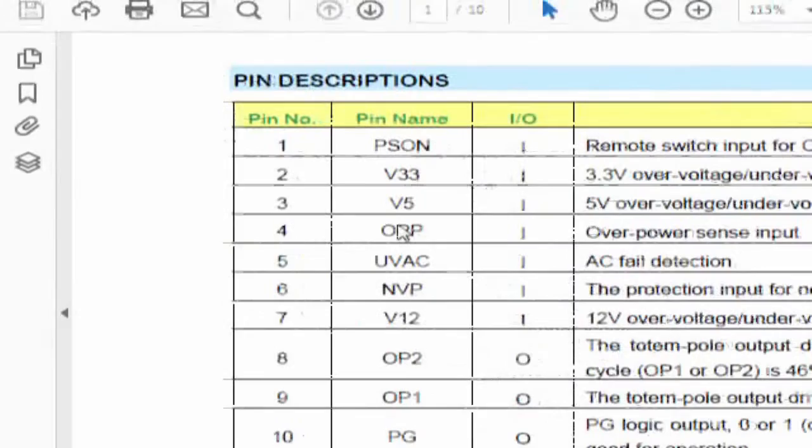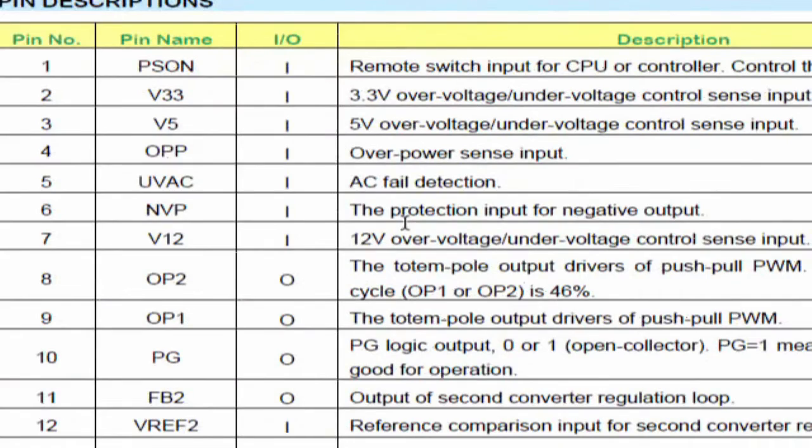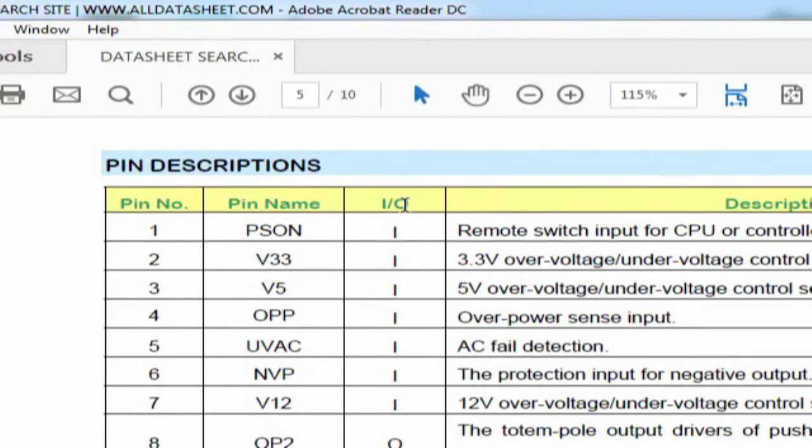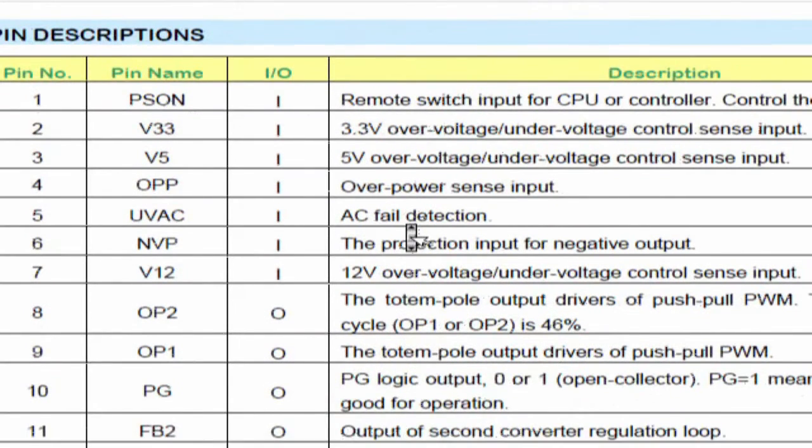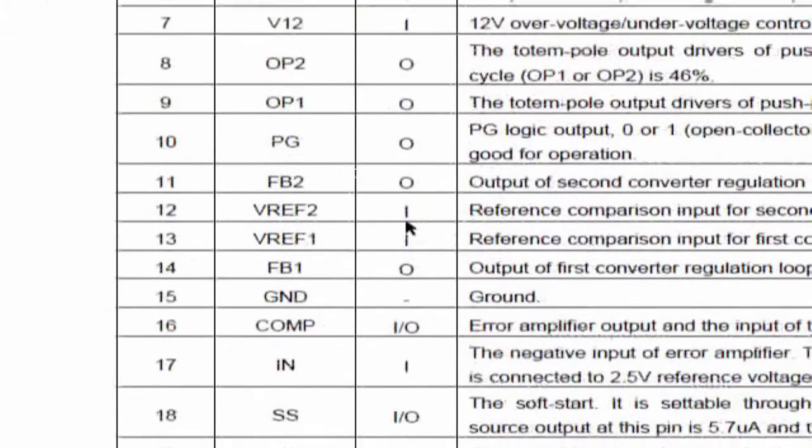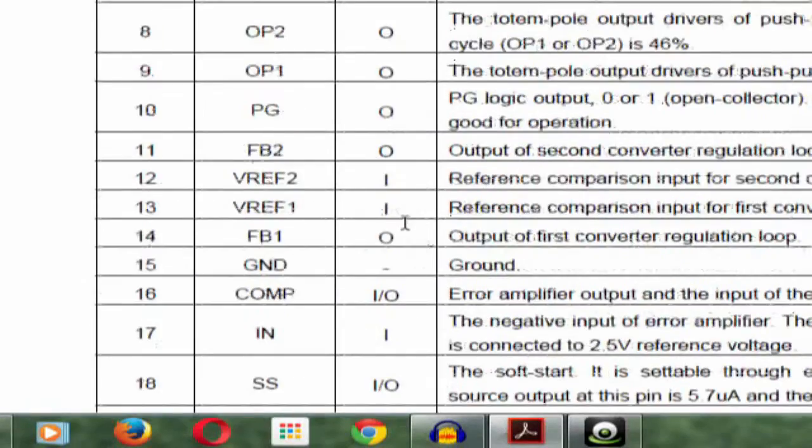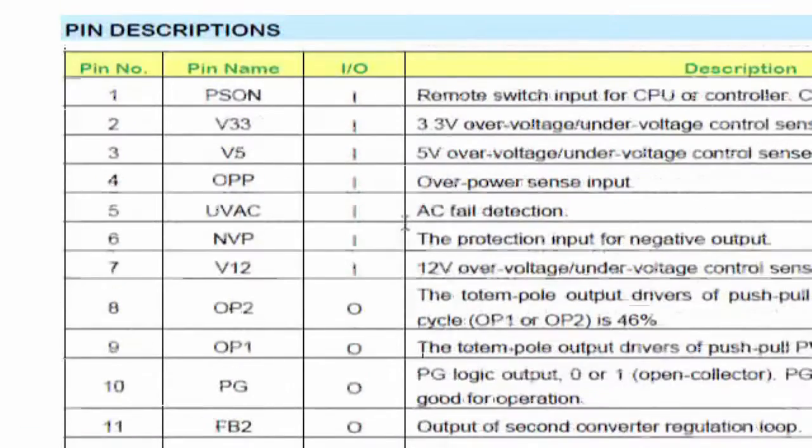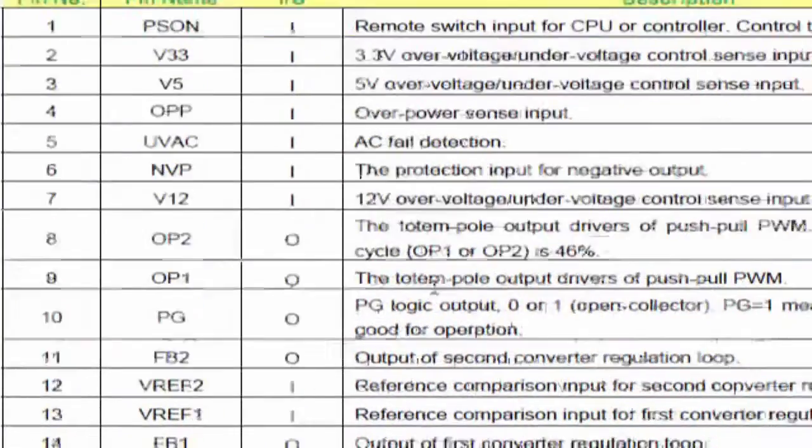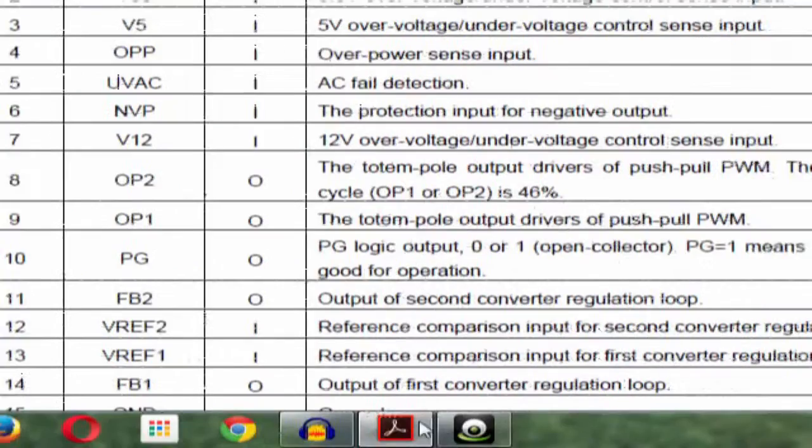The input ports are used for maintaining the voltage and monitoring if there's a low voltage or high voltage. Here you can see the pin numbers, pin name, and this 'I' over here represents if it is an input or output. Jump to the datasheet and find all the input ports. Write it down somewhere in your notebook because you are going to need it. Once you're done with that, switch on your multimeter because now we are going to make some measurements.